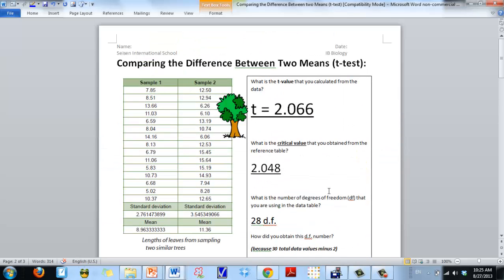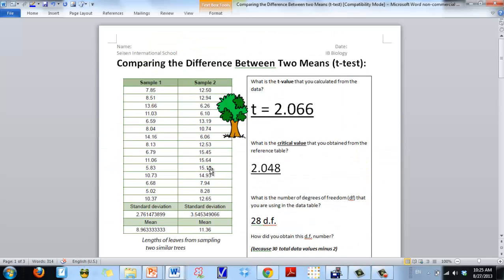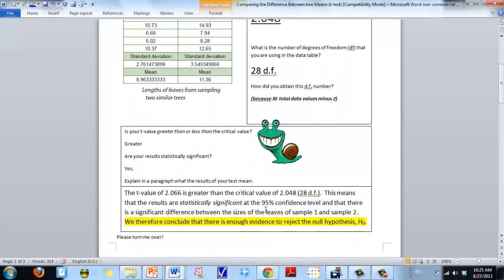Now, this doesn't tell us the reason for why these leaves are larger than this or the reason why these leaves are different size. It just tells us that the raw numbers that we put in have told us that there is reason for us to believe that there is some kind of reason that is explaining why these leaves are larger than those leaves. And maybe we can go investigate further. But this is just a mathematical statistical calculation to help us do this.